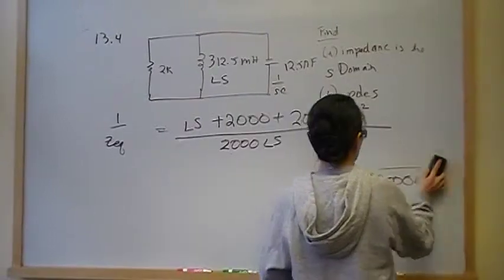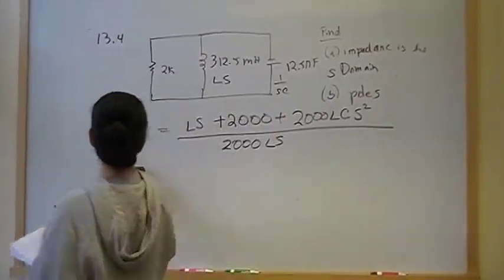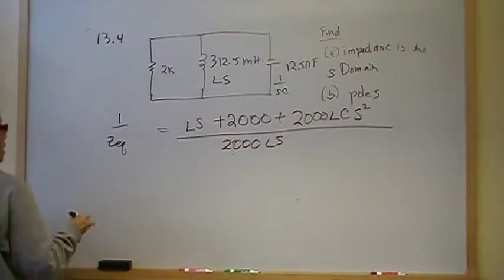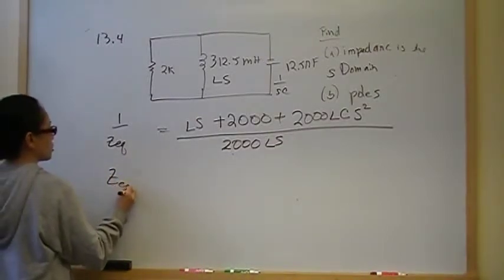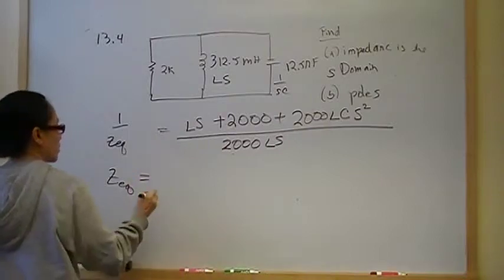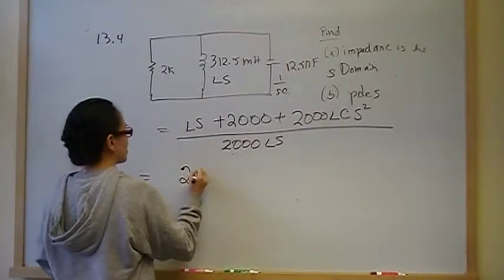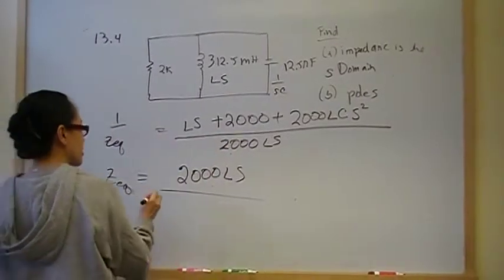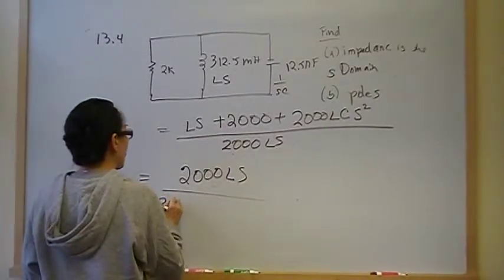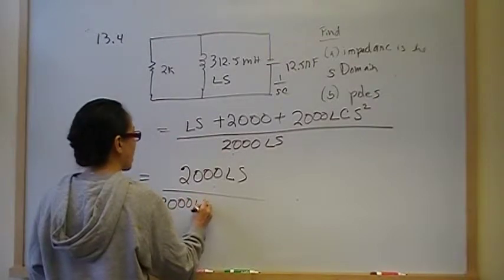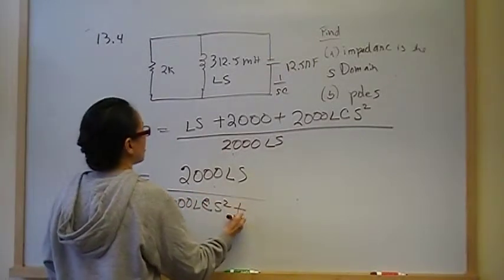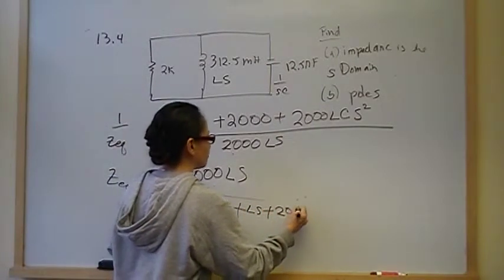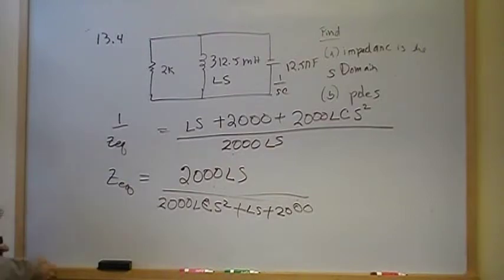We have 1 over Z_EQ equal to that expression. If we flip both sides, they will be equivalent. Therefore Z_EQ equals 2000LS over 2000LC·S squared plus LS plus 2000. That's Z_EQ.